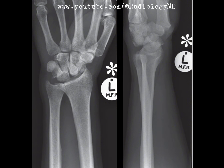From a radiological perspective, always take a moment to really evaluate the alignment of the carpal bones when looking at wrist films. On the dorsi-palmar view, you want to trace out Gilula's arcs — those nice smooth arcs of the carpal bones. Disruption of these arcs can signal dislocation or fracture. On the lateral view, the capitate should align with the lunate, and the lunate should align with the radius. Basically, everything should form a straight line.